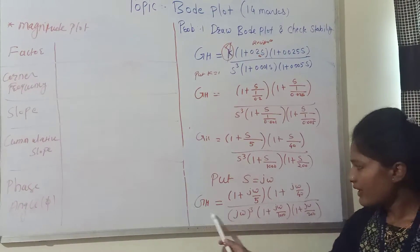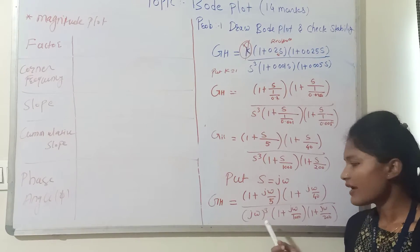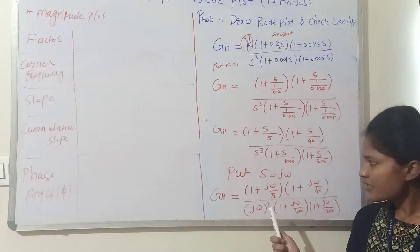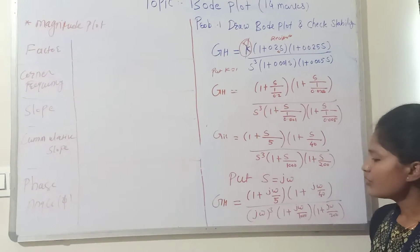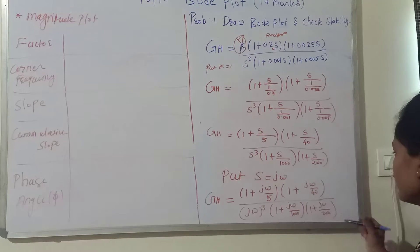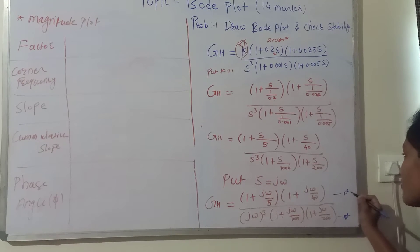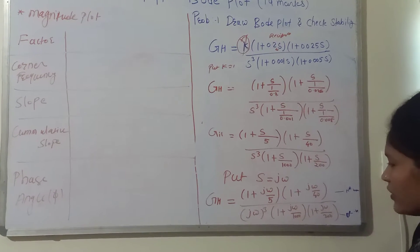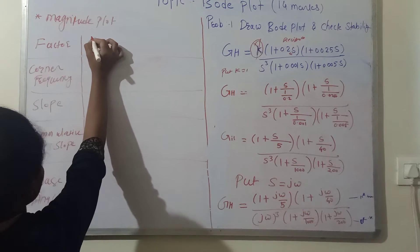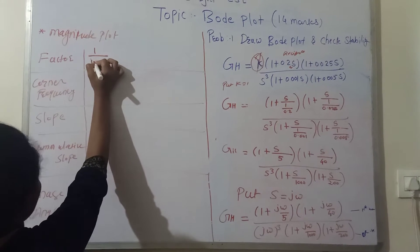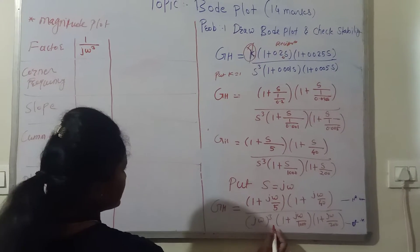For the factors in the table, the first factor is (jω)³ — the s-cube denominator term. We write it first. Then in increasing order of corner frequency: the numerator factors 1 + jω/5 and 1 + jω/40, and denominator factors 1/(1 + jω/200) and 1/(1 + jω/1000). Numerator factors are positive and denominator factors are negative.